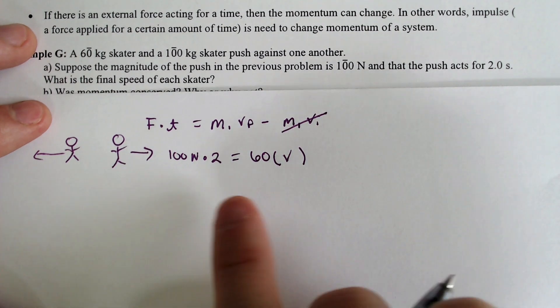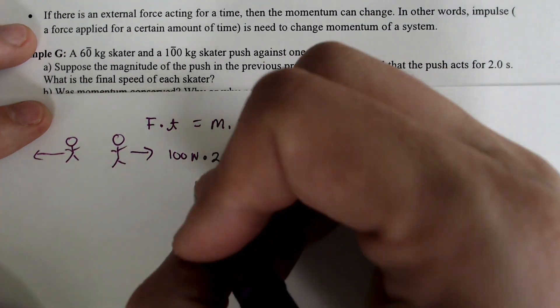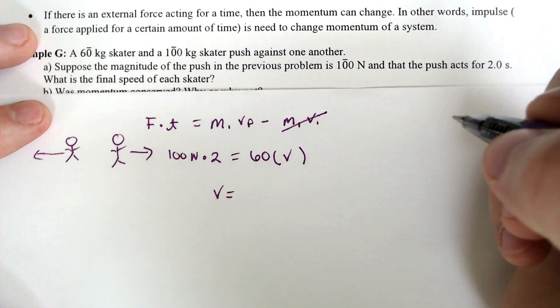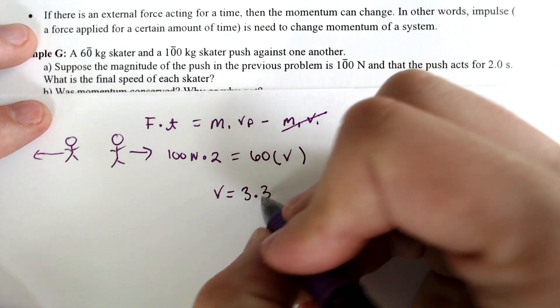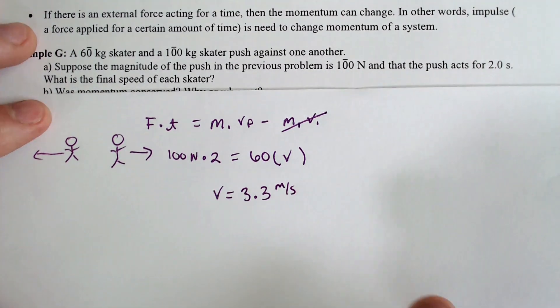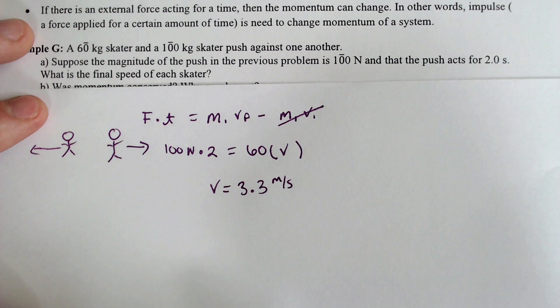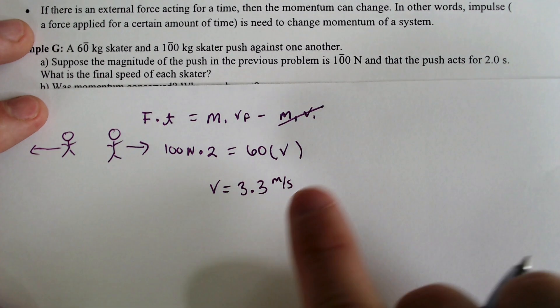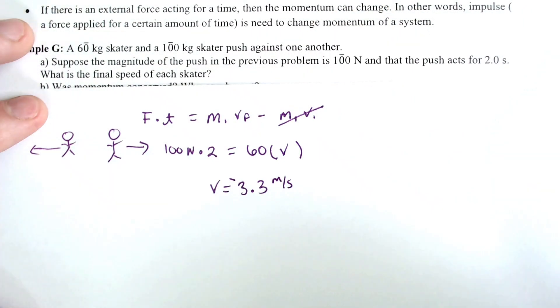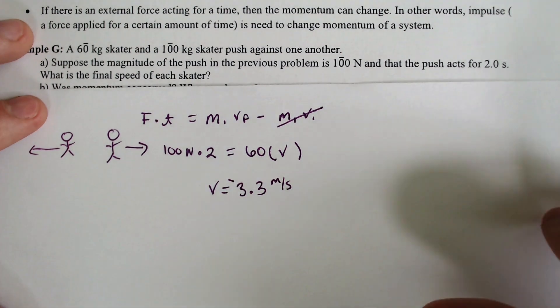If we divide by 60, we would end up with a velocity for this skater of 3.3 meters per second. Now, this is the 60-kilogram skater. Remember, the 60-kilogram skater was moving to the left and is still moving to the left, so we're going to call it negative 3.3 meters per second for that.